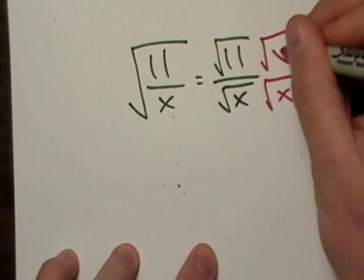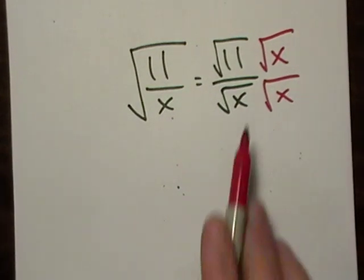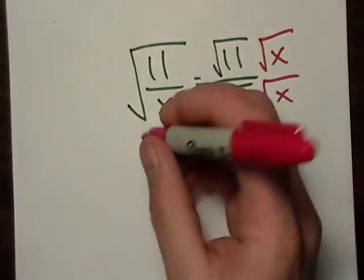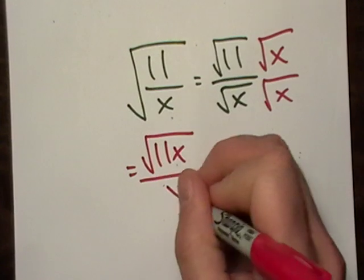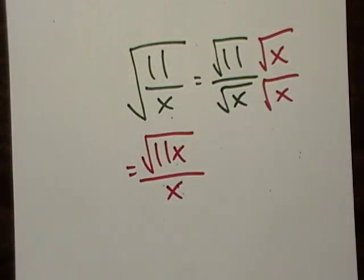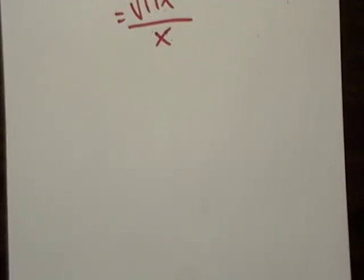We want to remove the radical from the denominator. I'm just going to do the same thing I did on the previous problem, and I end up with 11√x over x. It's not too bad.